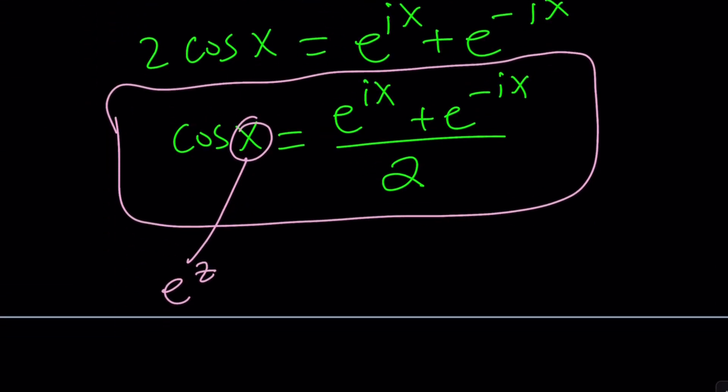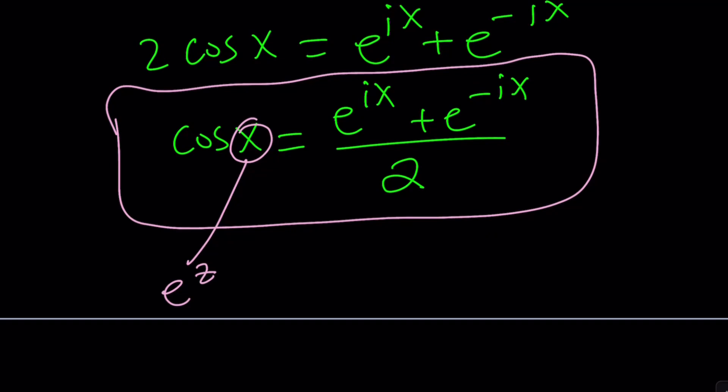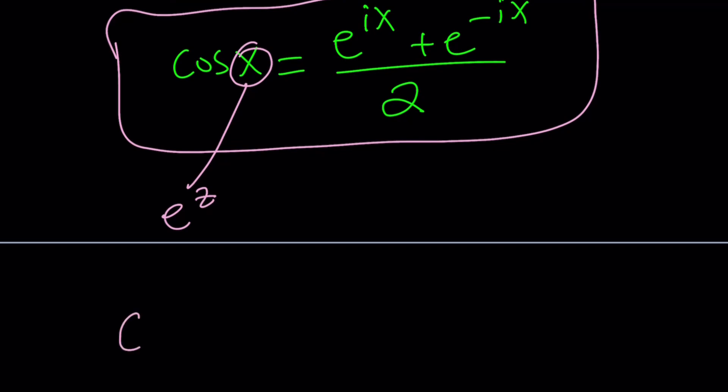But I can be replaced and we can hopefully get something nice from here. Let's go ahead and do it. Cosine of e to the z is e to the ie to the z plus e to the negative ie to the z divided by 2 and we're going to set it equal to i.